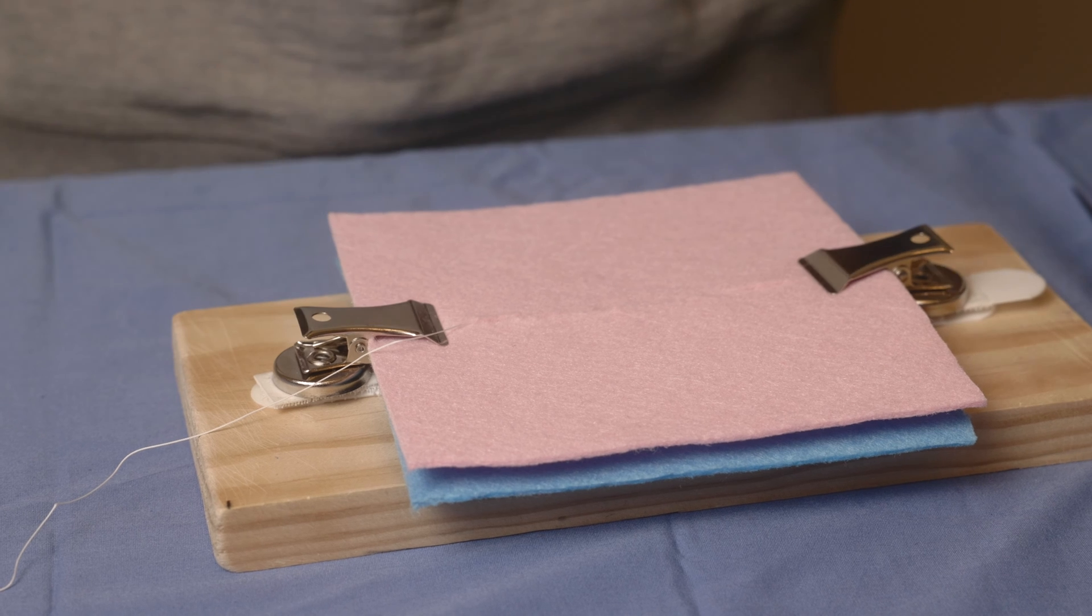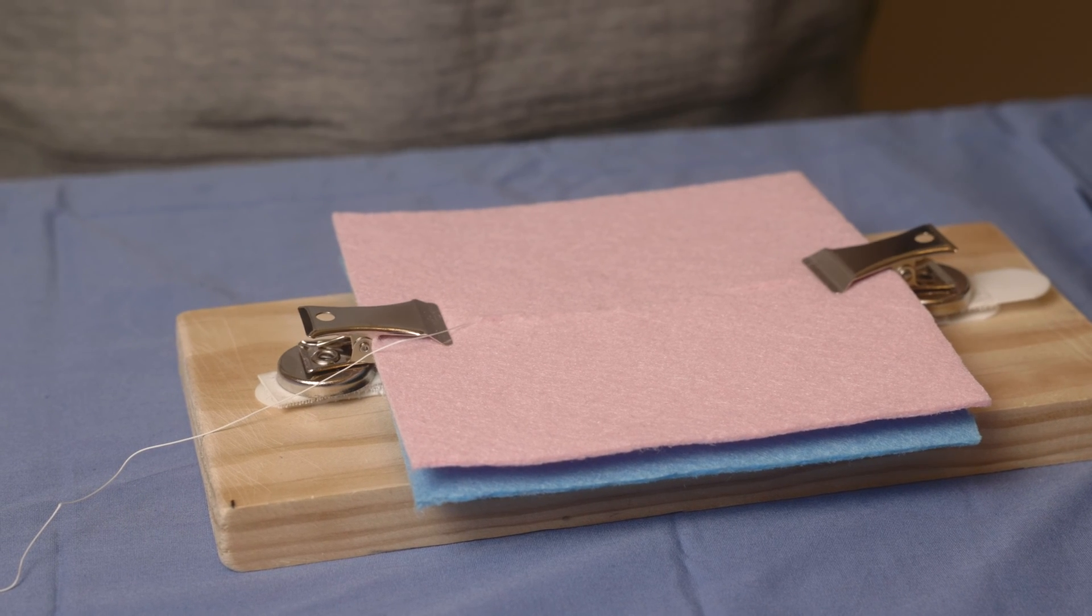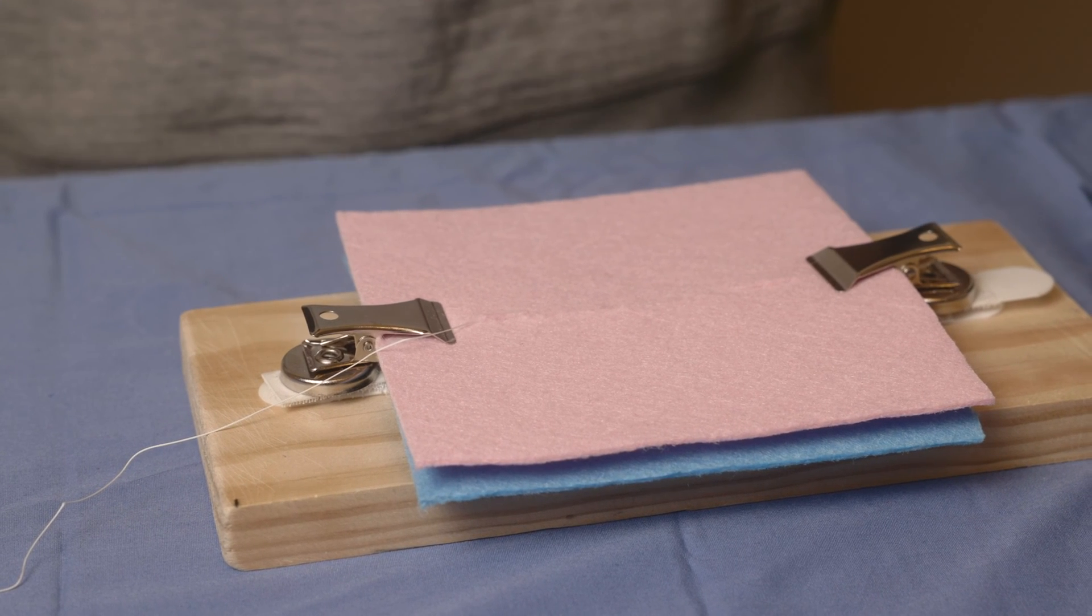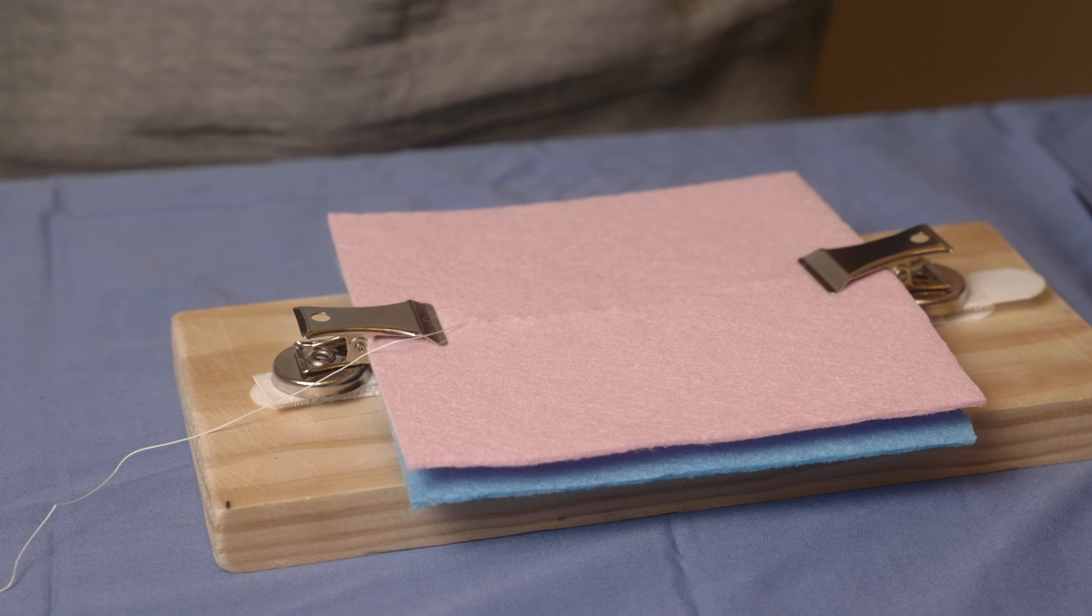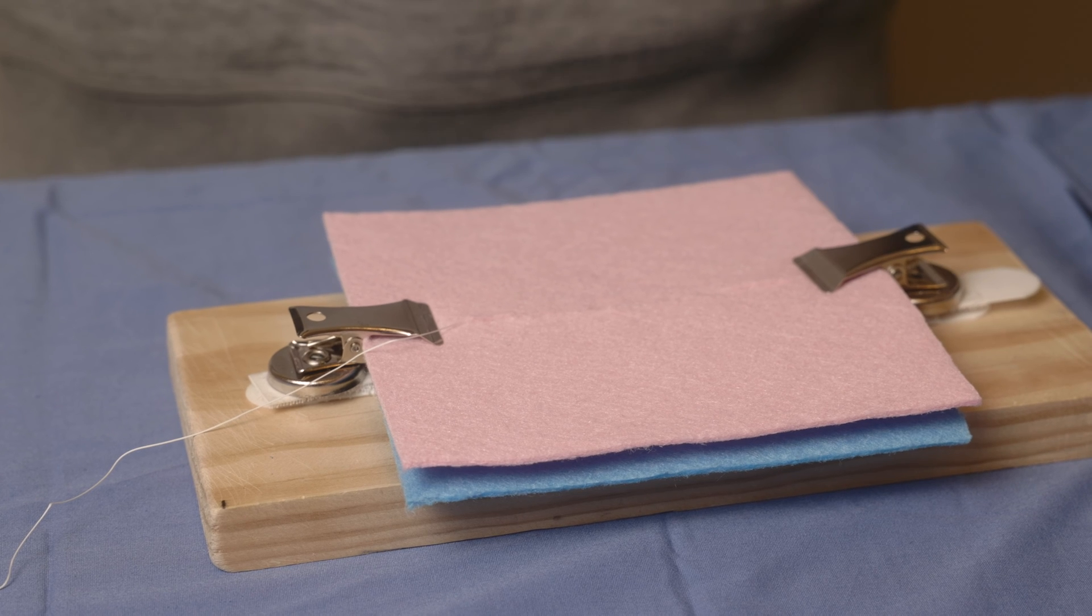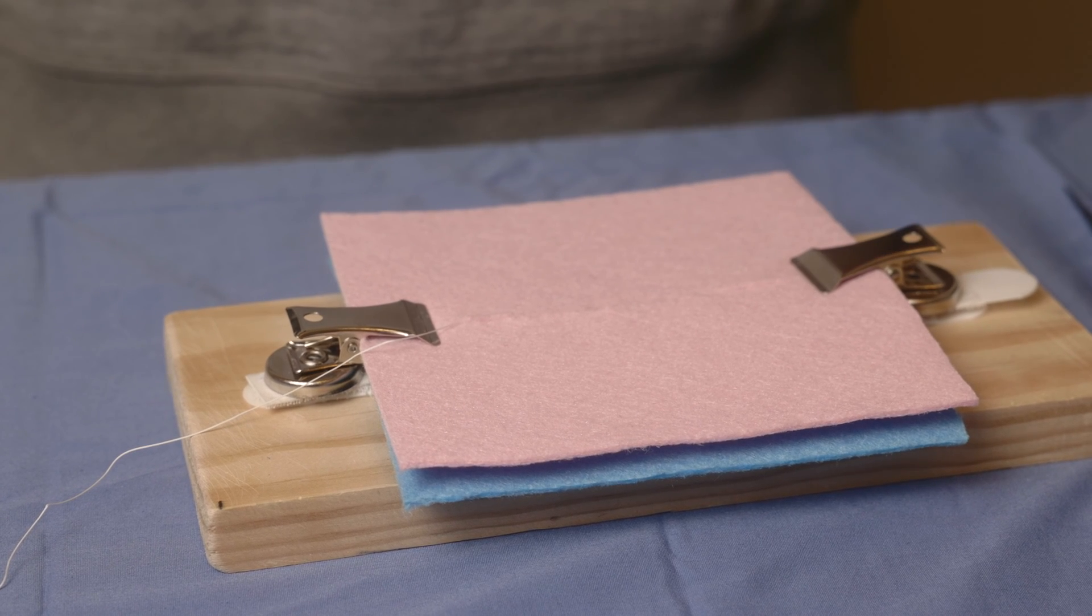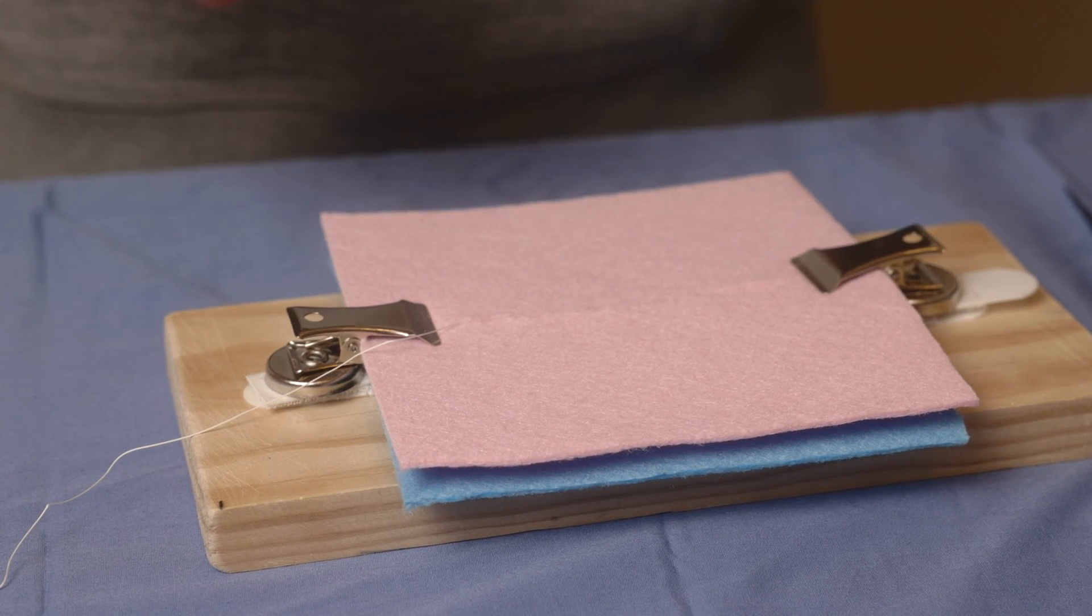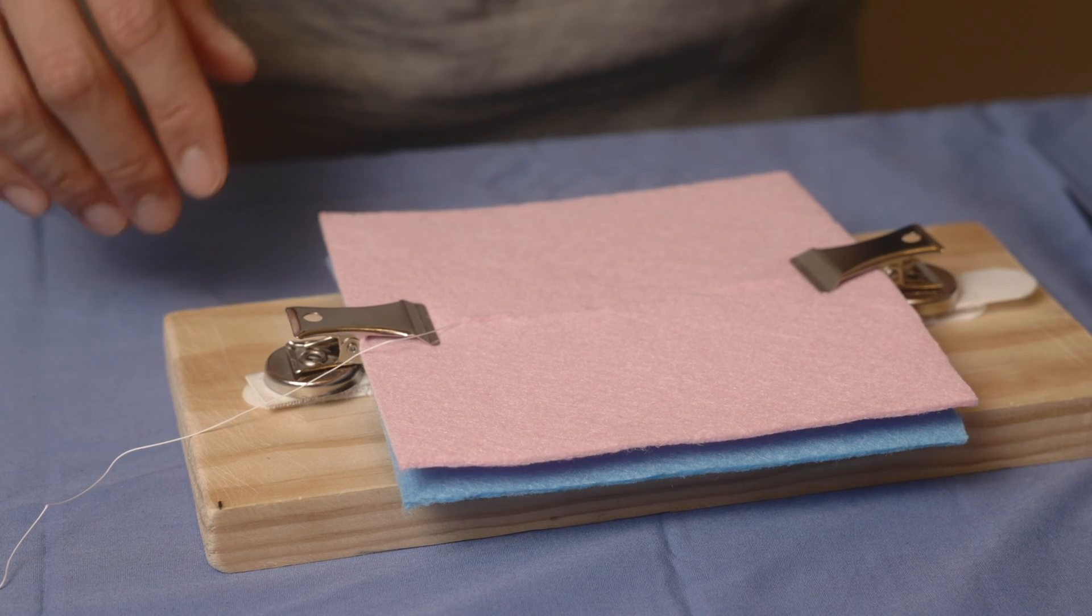So that's a subcuticular closure. It's probably one of the most common things that you learn how to do in the OR first. And once you demonstrate proficiency with this, because it's actually technically very difficult to do a good skin closure, which is ironic because you think that skin closure is something that should be technically very simple.